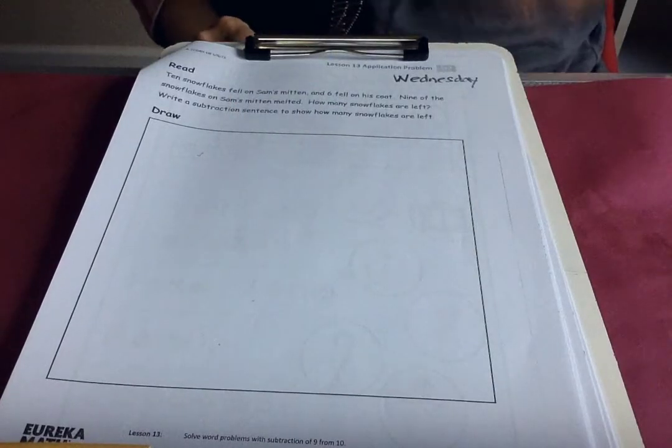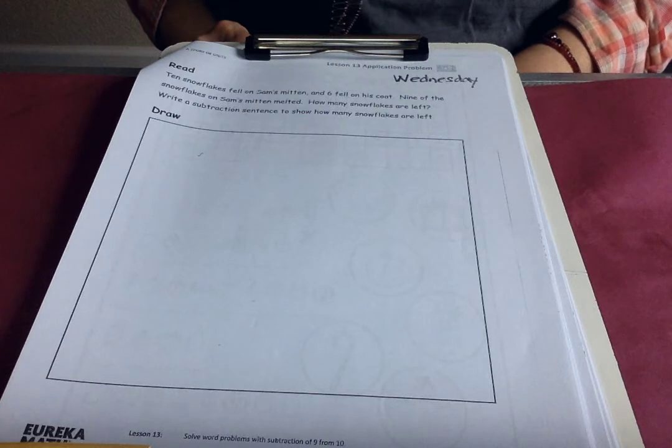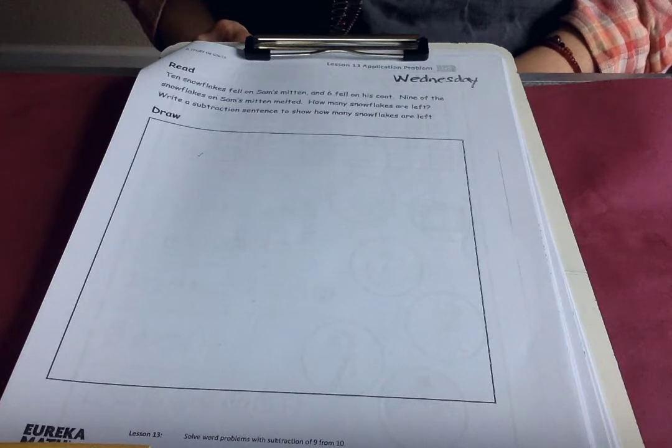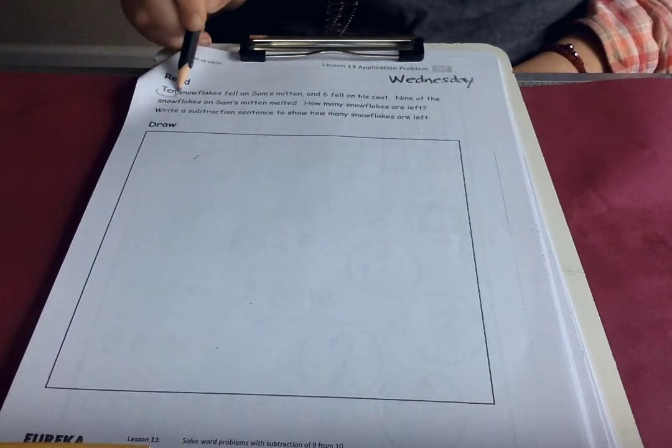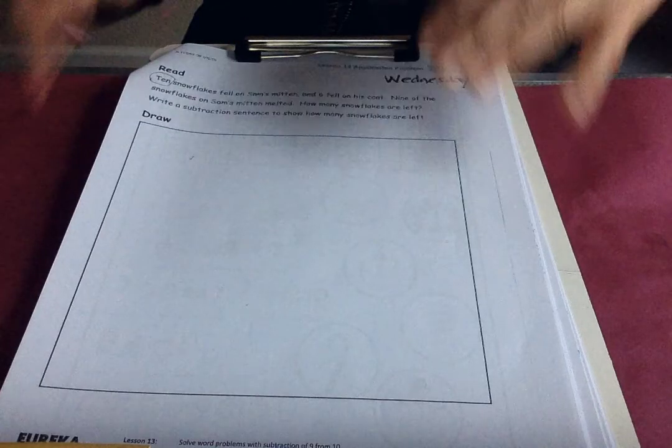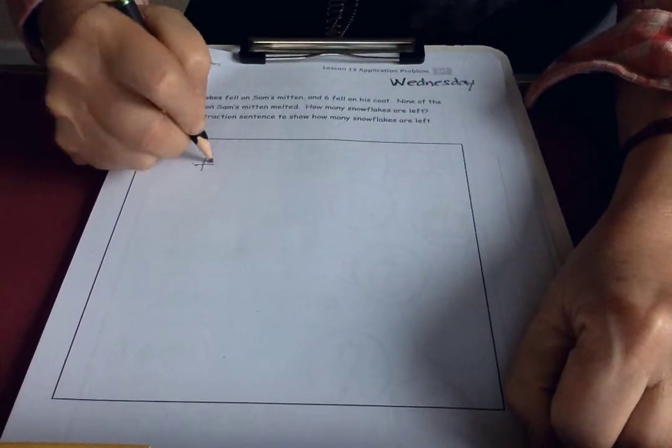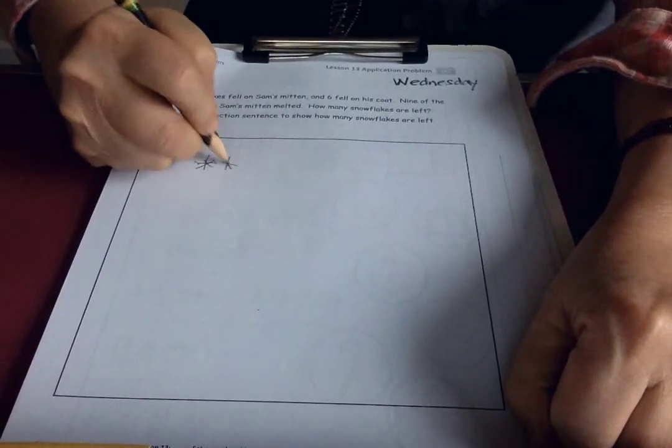Our story. Ten snowflakes fell on Sam's mitten and six fell on his coat. Nine of the snowflakes on Sam's mitten melted. Oh my goodness, so much information. I think we need to start making the picture. Ten. Look at that, they used the word ten, they didn't use the number. Ten snowflakes. Shall I just draw snowflakes? I could do dots if it was too complicated, but I think I can do snowflakes.